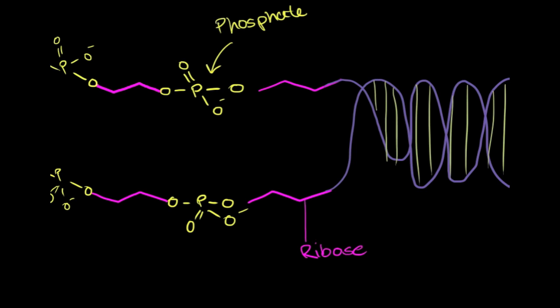There are four types of nucleic acids known as bases: adenine, thiamine, cytosine and guanine.